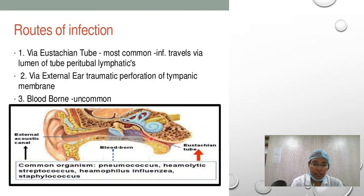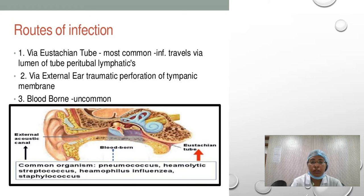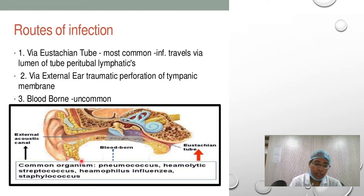Regarding the spread of infection: the middle ear cleft connects via the eustachian tube anteriorly, and to the mastoid antrum through the aditus. If there is infection in the nasopharyngeal region or nose, it may spread through the eustachian tube into the middle ear, causing mucosal inflammation. The middle ear connects to the inner ear, which includes the cochlea, the vestibule with semicircular canals, and nerve supply via cochlear and vestibular parts.